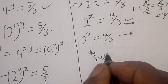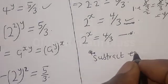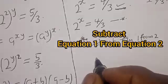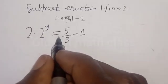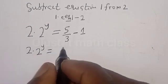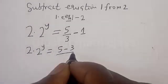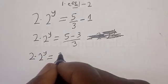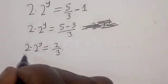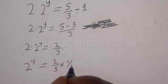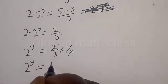Subtracting equation 2 from equation 1, we have 2 multiplied by 2 raised to the power y equals 5 divided by 3 minus 1. This gives 5 divided by 3 minus 3 divided by 3, which equals 2 divided by 3. Dividing both sides by 2, we have 2 raised to the power y equals 2 divided by 3 multiplied by 1 over 2, which simplifies to 1 divided by 3.